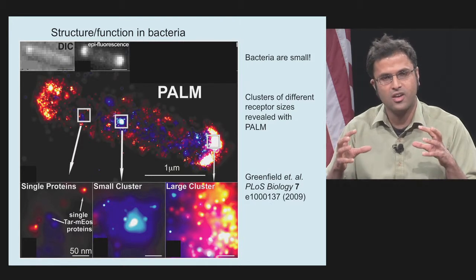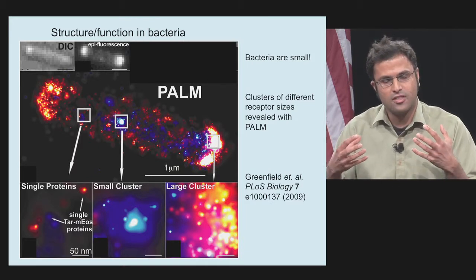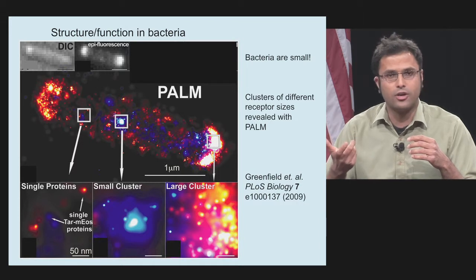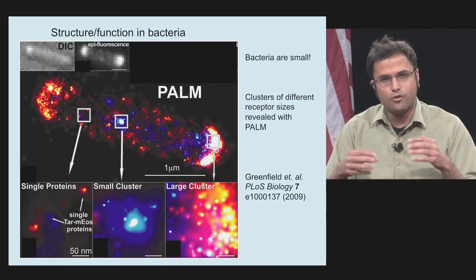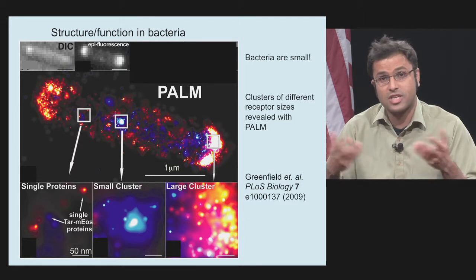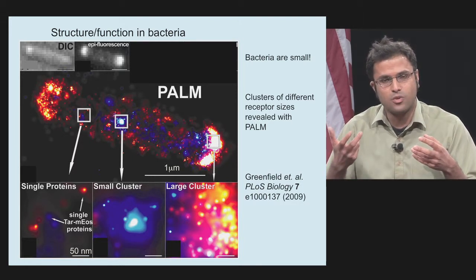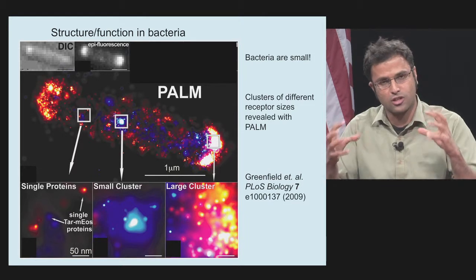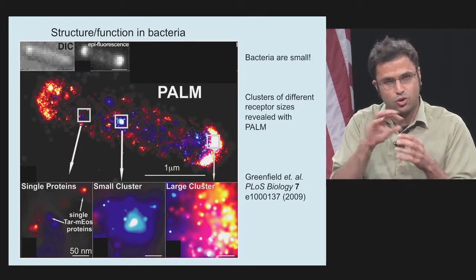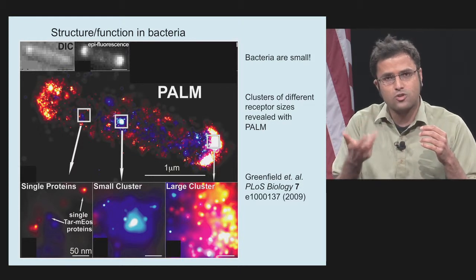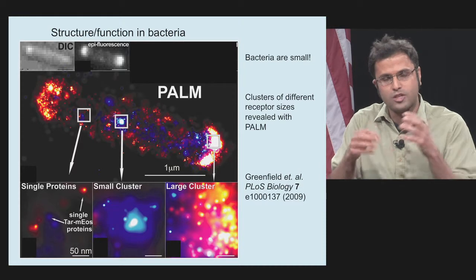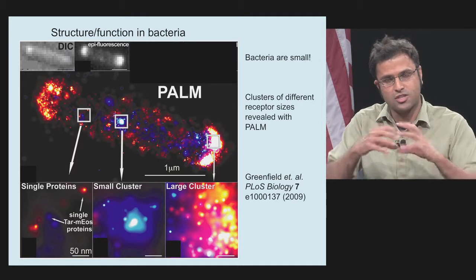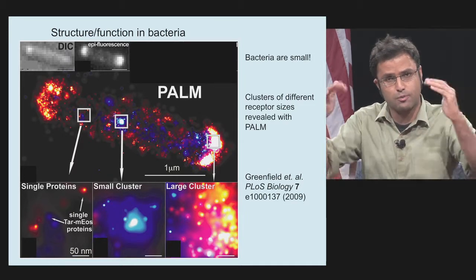I thought it would be good to pick a few biological examples that highlight information obtainable using these super-resolution imaging methods that couldn't be obtained any other way. Starting with bacteria — bacteria are pretty small, and if you're interested in membrane proteins that sense chemicals, chemoreceptors inside bacteria, visualizing these with a diffraction-limited microscope gives a rather blurry image. You can see the coarse spatial location of clusters, but you don't know anything about the fine structure of how many receptors are in a cluster. Using a super-resolution technique like PALM or STORM, you can see where these proteins are within the membrane and how big the clusters are — from single receptor complexes to whole macromolecular complexes visible at the poles of the cell.